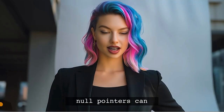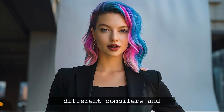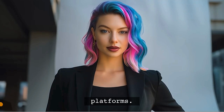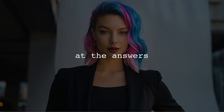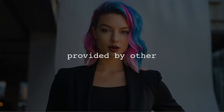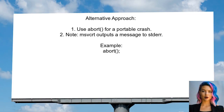The behavior of dereferencing null pointers can vary significantly between different compilers and platforms — a reminder of how nuanced programming can be. An alternative approach to force a crash in C is to use the abort function. This method is portable and effectively terminates the program. However, Microsoft's C runtime outputs a message to stderr when abort is called, which can clutter test results.